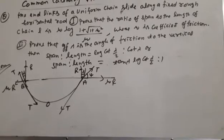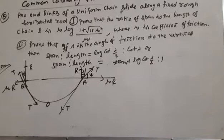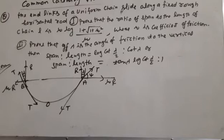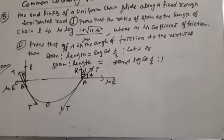The maximum span is found when points A and B are in the state of limiting equilibrium. If the reaction at A is R_A, then the limiting friction is mu·R_A. At both A and B the friction force is mu·R. The tangent at A and B must be inclined at angle lambda to the normal, such that tan(lambda) equals mu, i.e., mu equals tan(lambda).